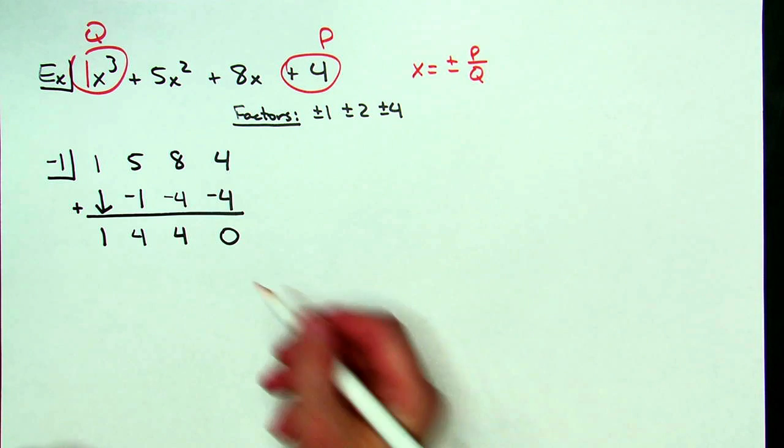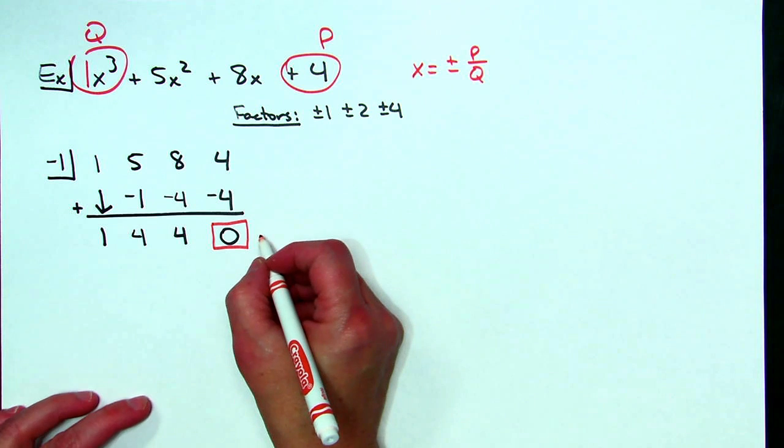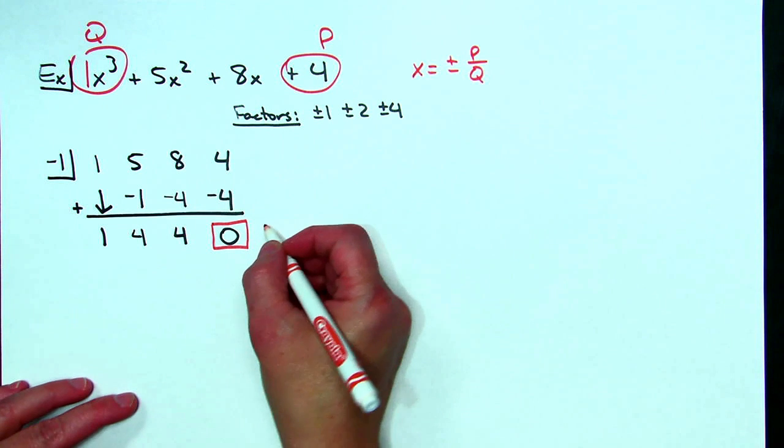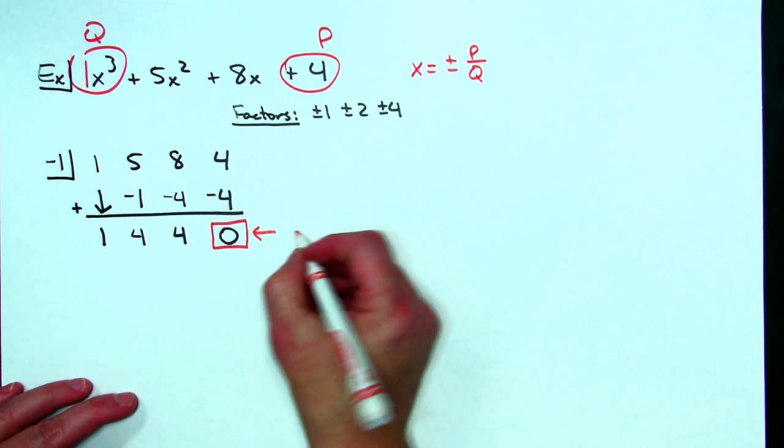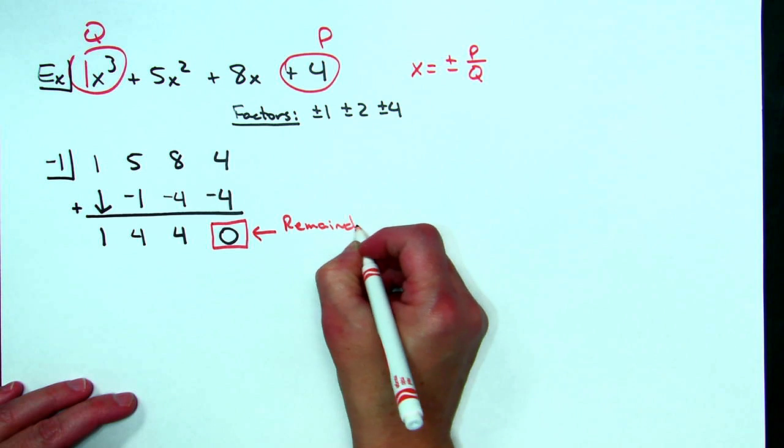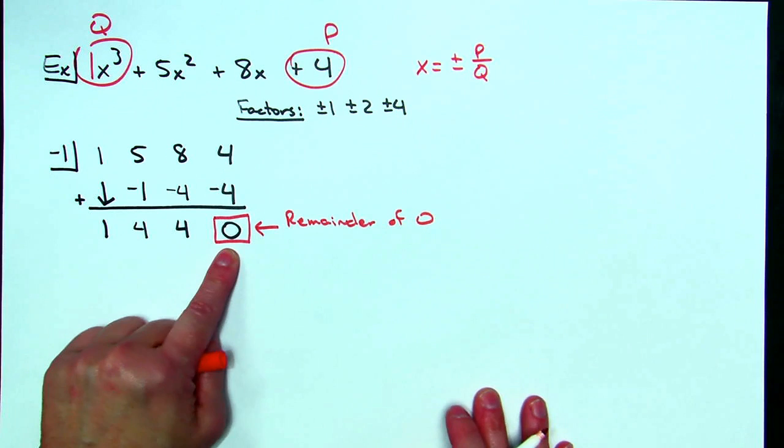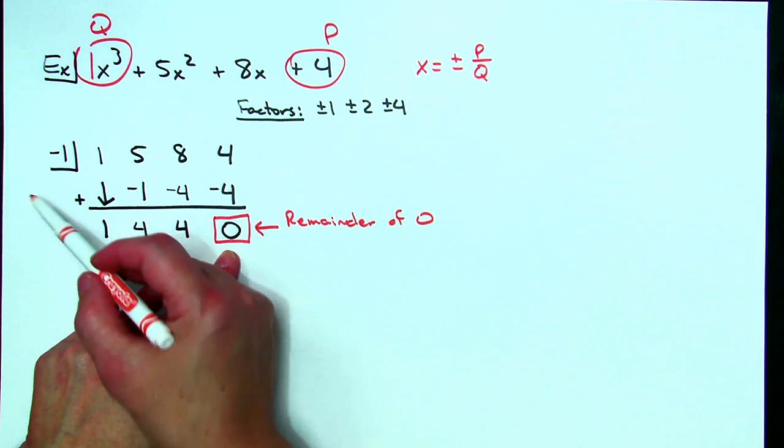As long as you get a remainder of zero then you know that you have found a root. So that's what we're looking for is a remainder of zero. Had this been any other number other than zero then that would not have worked